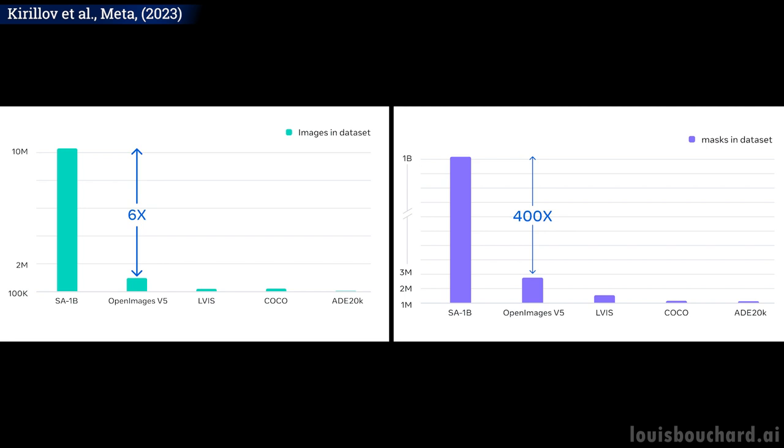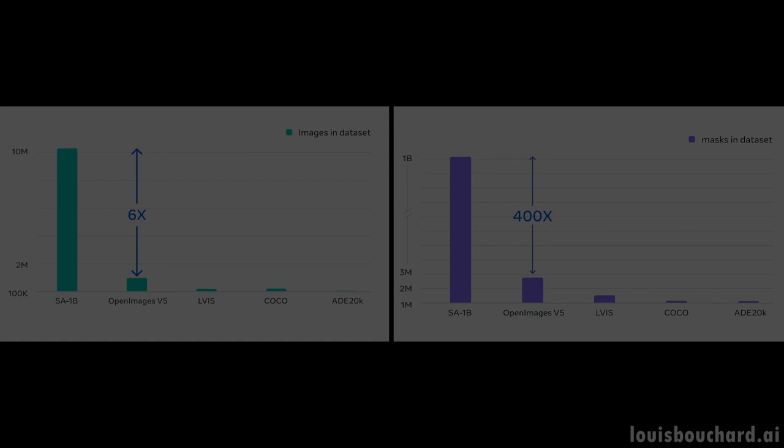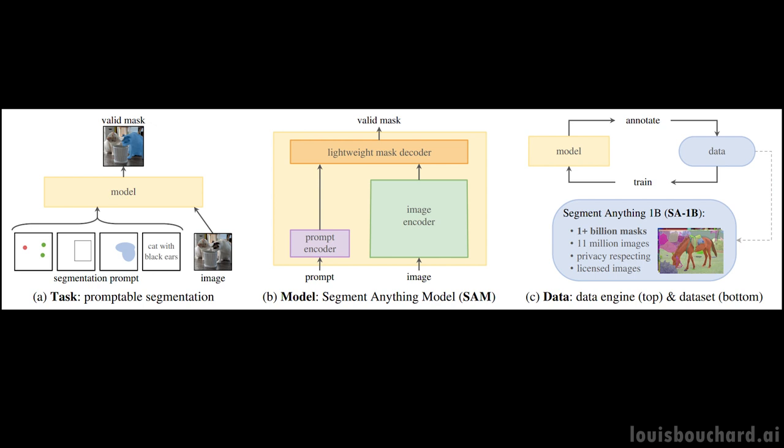This is enormous and of super high quality with really high definition images. And that's the recipe for success: always more data and good curation. Other than data, which most models use anyways, let's see how the model works and how it implements prompting into segmentation tasks because this is all related. Indeed, the dataset was built using the model itself iteratively.